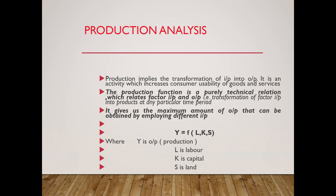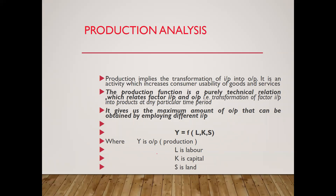Here is Y = f(L, K, S). Y is the output — that is output of production. L stands for labor, K stands for capital, S stands for land. These are the inputs. If we increase the inputs, output will also increase; and if we are decreasing these inputs, output would also decrease.